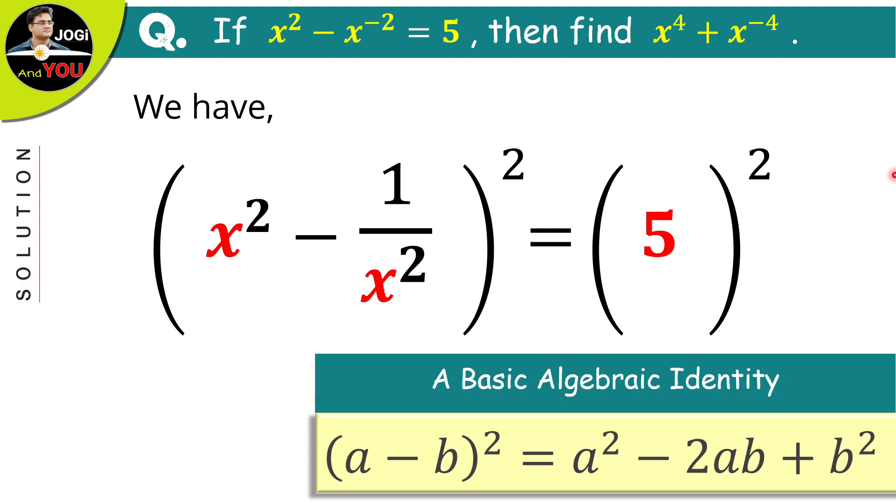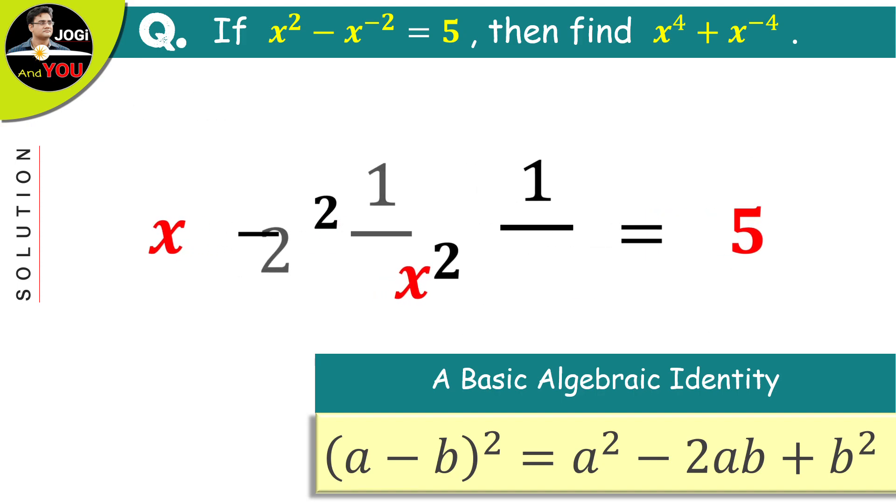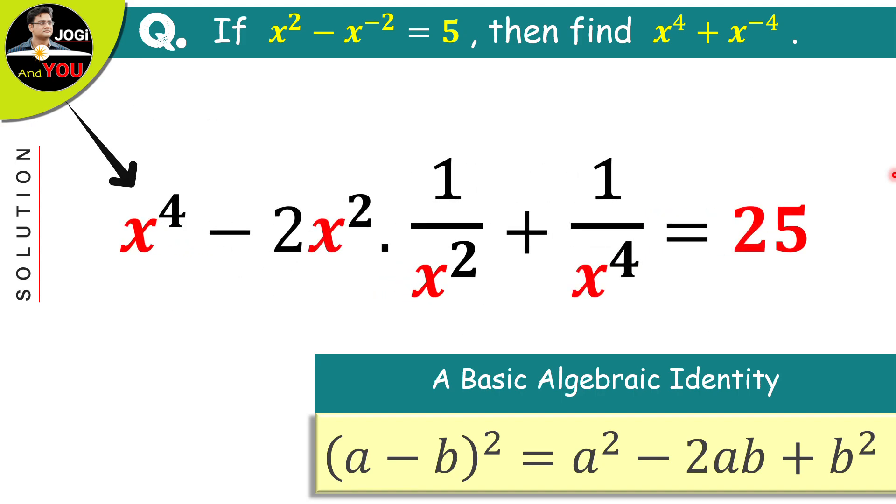After implementing this identity to the left side, we will have x to the power 4 minus 2x square times 1 upon x square plus 1 upon x to the power 4 is equal to 25.